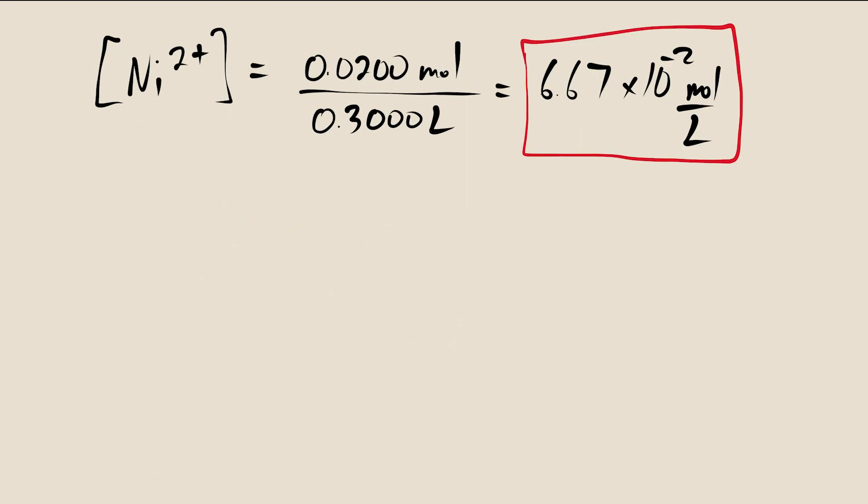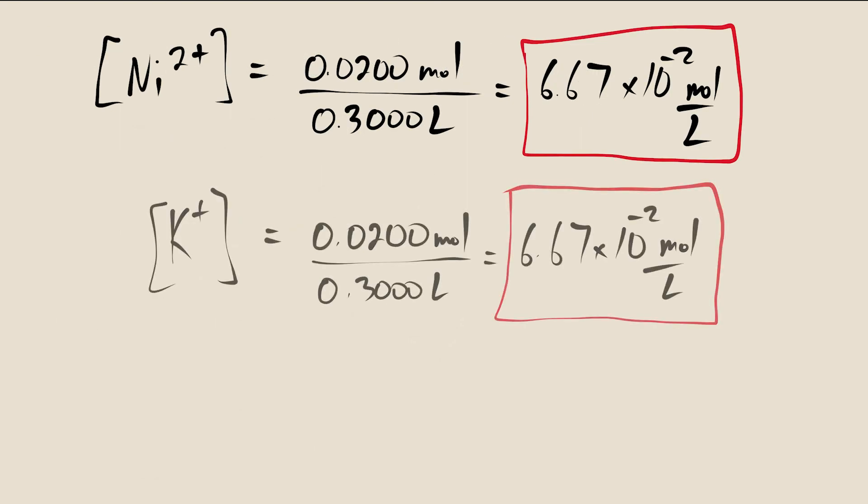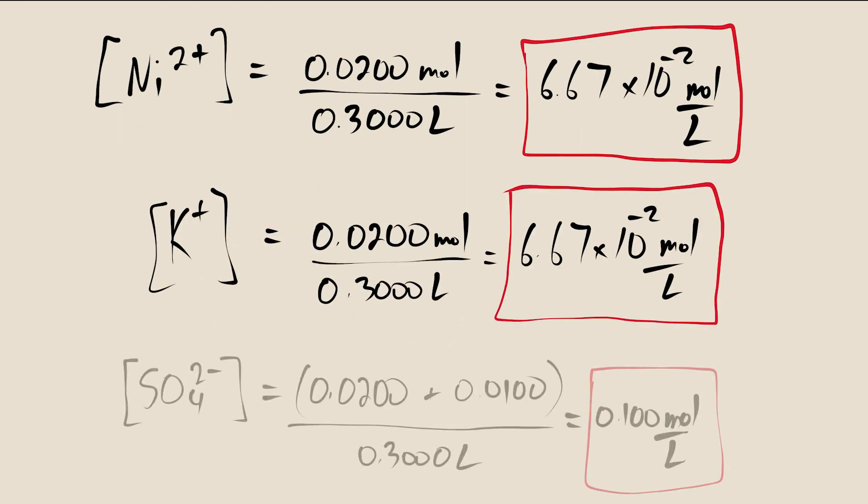Now that we have the amounts of each ion in moles, we simply divide by the total volume to find the concentration of each ion. Remember, we mixed 100 mL of potassium hydroxide with 200 mL of nickel-2 sulfate, so the total volume is 300 mL.